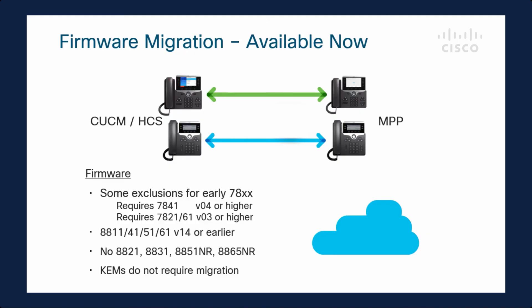Regarding which devices are eligible to be migrated to MPP firmware: the 7800 series and the 8800 series are supported. For the 7800 series, the 7841 requires hardware version 4 or higher, and the 7821 through 7861 require version 3 or higher. For the 8800 series, the 8811, 8851, and 8861 require hardware version 14 or earlier. The 8821, 8831, and the NR (no radio) variants are excluded. Key expansion modules require no migration.